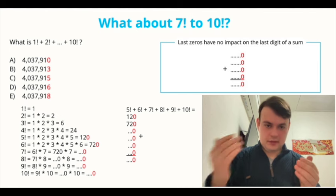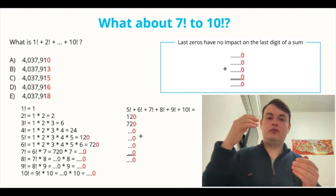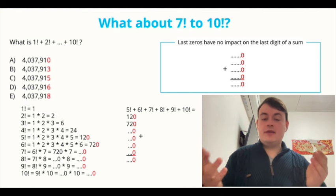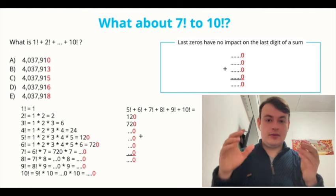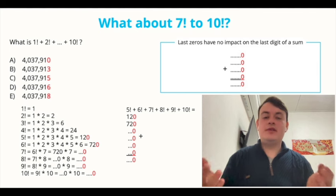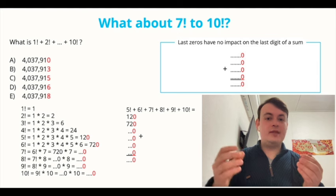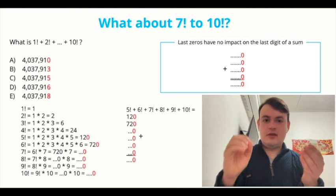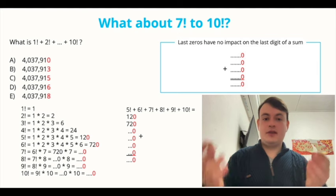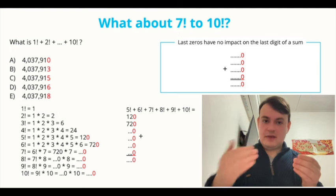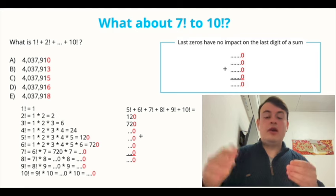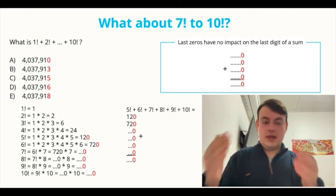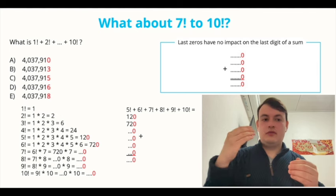The same way 7 factorial equals to 6 factorial times 7. And as we remember, 6 factorial ends with a zero. From basic multiplication rules, we know that if we multiply a number ending with a zero by any other integer, the product will end with a zero. The same way 7 factorial, we don't care what the number is, right? We care only about the last digit. The same way 7 factorial ends with a zero.